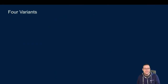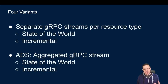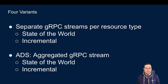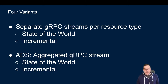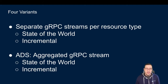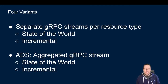There are four different variants of XDS. Similar to State of the World and incremental, we can also decide how to set up our gRPC streams. The default way is to have a gRPC stream per resource type — for listeners, clusters, routes, and endpoints, one stream each, four total. Alternatively, I can implement ADS, or Aggregated Discovery Service, which lets me have one stream for all resource types and send traffic across all types over that one stream. For today's purposes, we're going to use the simple way: a stream per resource type with state-of-the-world updates.